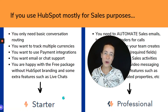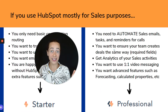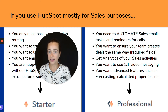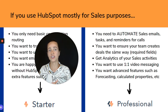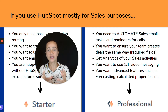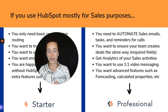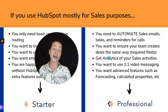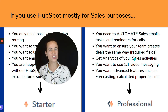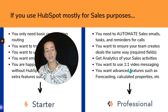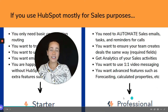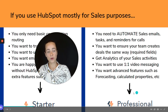However, when it comes to automation for sales — if you need to use sales sequences to send automated emails to your leads, or set up automated reminders for calls, emails, and tasks — you need a Professional package. Or if you want to ensure your team creates deals consistently using required fields at deal creation, or you want better analytics of all sales activities to measure team performance, or you want one-on-one video messaging, or advanced features like forecasting and calculated properties — yes, you need access to a HubSpot Professional subscription.